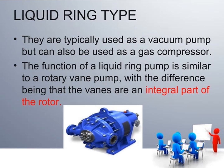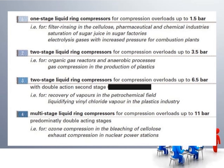The liquid ring type compressor is used as a vacuum pump but can also be used as a gas compressor. It is similar to a rotary vane pump, with the liquid ring forming an integral part of the rotor. Liquid ring compressors have multiple configurations: a one-stage liquid ring compressor handles up to 1.5 bar, a two-stage handles up to 3.5 bar, two-stage for compression overloads handles up to 6.5 bar, and multi-stage handles up to 11 bar.